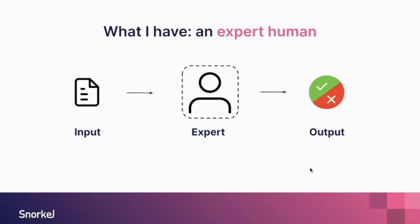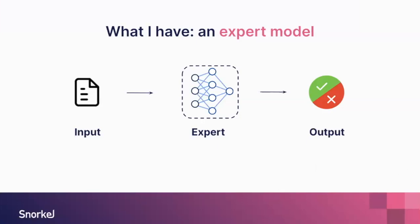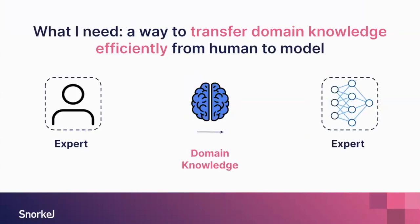What we have is an expert human — someone who knows, based on background and experience, that given a specific input, this should be the output, this should be the decision that needs to be made. However, what we want is to have an expert model — a model that can either replace the human or augment them like a co-pilot — that can do that mapping from input to output. To do this, we need to efficiently transfer domain knowledge from the human to the model.